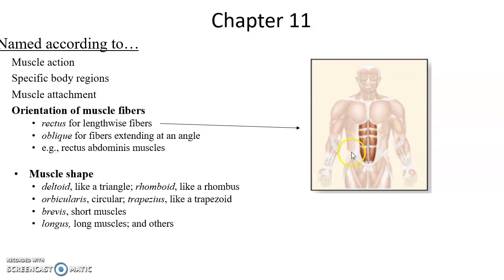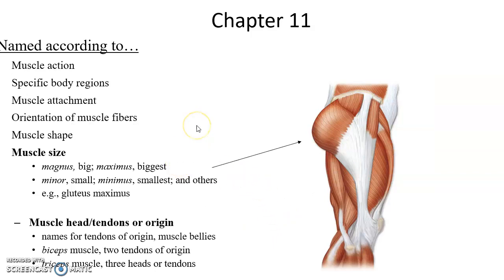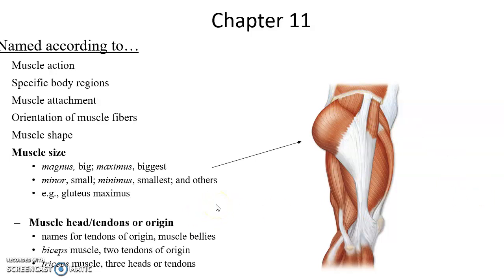Muscles can also be named based on their shape: deltoid for triangular, rhomboid for rhombus-shaped, orbicularis for circular, trapezius for trapezoid-shaped, brevis for short, longis for long, and many more. They can be named by their relative size compared to similar muscles: magnus for big, maximus for biggest, minor for small, minimus for smallest. For instance, gluteus maximus is the largest, under it is gluteus medius, and under that is gluteus minimus.